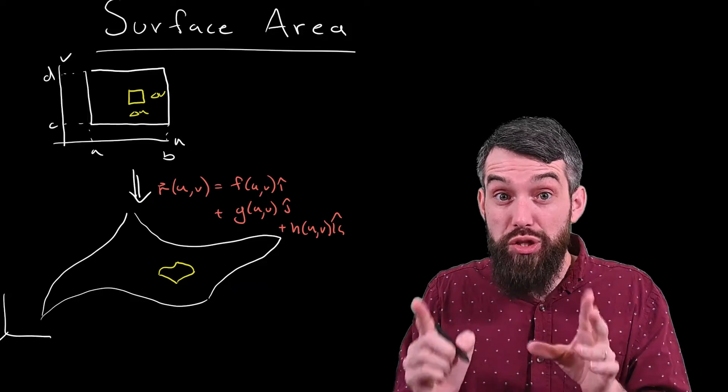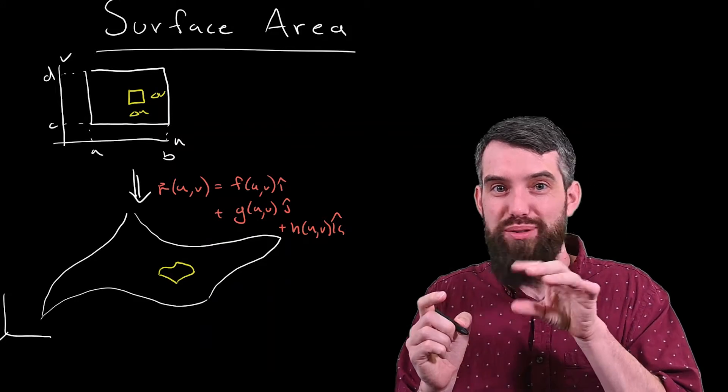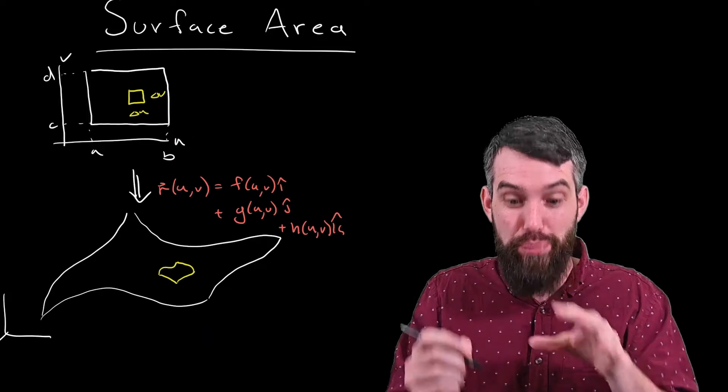And so likewise the boundaries of this region, of this little sort of rectangular-like thing that I've written, represent boundaries where it's the transformation of something with the constant value of U, or the transformation of something with the constant value of V. Okay, I want to zoom in here, so let me take this little small sort of squiggly rectangle thing and just blow it up a little bit so that I have some space to do some writing on it.